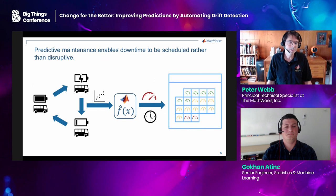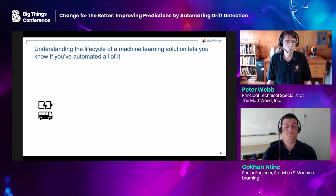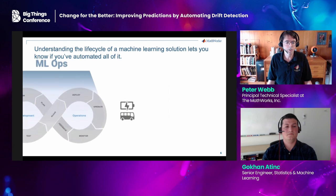But none of this is really new. Predictive maintenance solutions like this have been in use for several years. They perform well, but they are complicated and require a lot of human intervention — and that won't work for this client. Our bus company doesn't have much AI expertise, so it's very important that the solution requires little post-deployment maintenance.